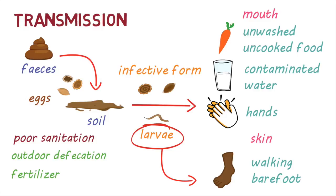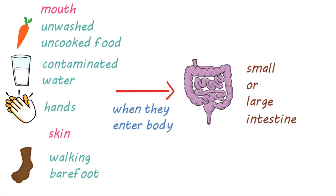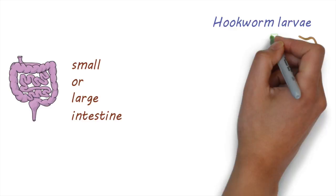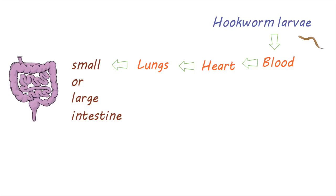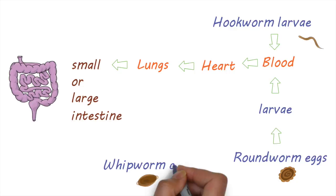Once they enter the body, they eventually make their way to the small or large intestine, where they live and grow, though they have slightly different routes to get there. Hookworm larvae that penetrate the skin are carried through the blood into the heart and lungs, and eventually make their way to the small intestine. Roundworm eggs that are swallowed hatch into larvae, enter the blood, make a trip via the heart and lungs, and eventually reach the small intestine. Whipworm eggs, on the other hand, hatch into larvae and make their way directly to the large intestine.